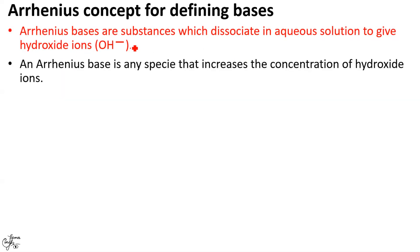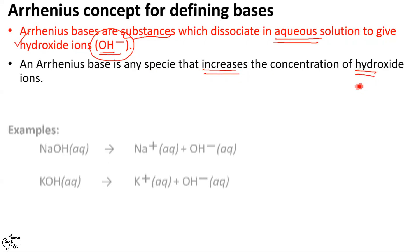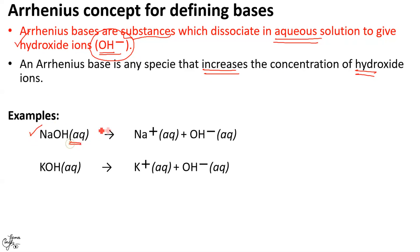Similar to acids, Arrhenius also defined bases. He proposed that bases are substances which dissociate in water — again, the word 'water' is important for Arrhenius acids and bases — and they give hydroxide ions, represented as OH⁻. We can also say that they increase the concentration of hydroxide ions in water. For example, sodium hydroxide NaOH in the presence of water furnishes Na⁺ cation and OH⁻ ion, so it is classified as an Arrhenius base. Similarly, potassium hydroxide KOH is another example.